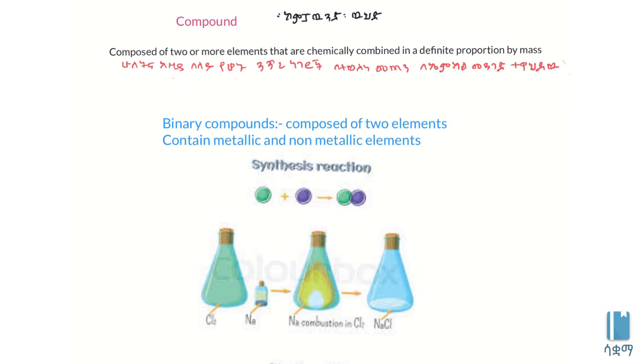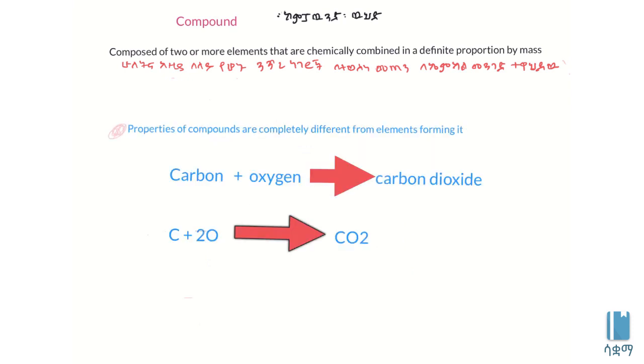This is a binary compound. The metal sodium and the gas chlorine combine to form sodium chloride. Another compound is carbon dioxide.